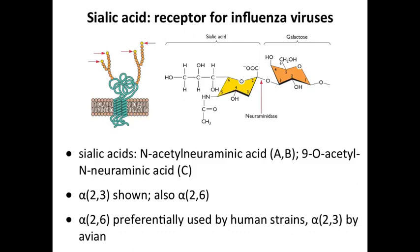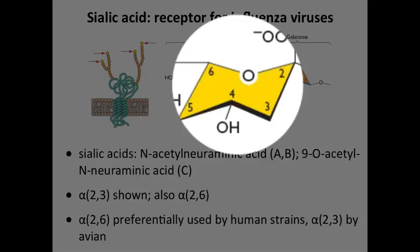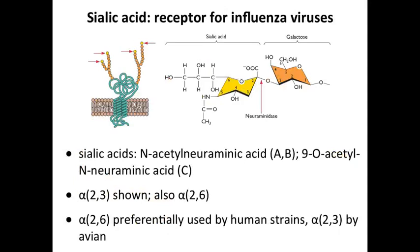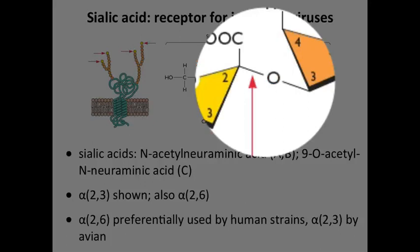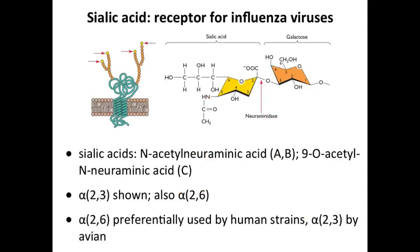Sialic acid is the receptor for influenza virus — soluble sialic acid can bind influenza by itself. Sialic acid, also called N-acetylneuraminic acid, is a six-carbon sugar with various side groups. The way it is linked to the second sugar in the chain determines receptor specificity for different influenza viruses. An alpha 2-3 linkage between the two sugars is one form; an alpha 2-6 linkage via an oxygen bond is another. Human respiratory tracts have largely alpha 2-6 sialic acids in the upper and lower tract, and human influenza viruses prefer alpha 2-6.